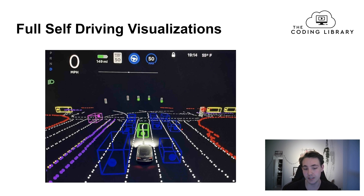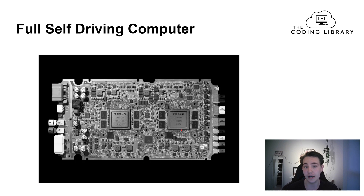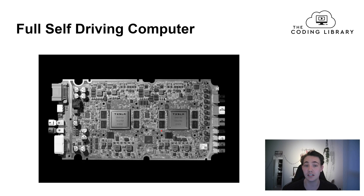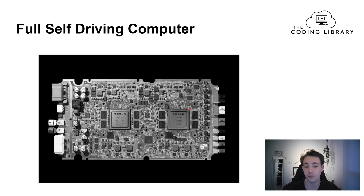To make all of this happen, Tesla uses the full self-driving computer inside the car to run neural network predictions. Tesla trains the neural networks on all the data, and when a neural network is trained and tested, it gets deployed to the cars via a software update flashed to the FSD computer. There are actually two identical computers inside the FSD computer — one on each side — forming a redundant system. Both computers perform the same predictions simultaneously.